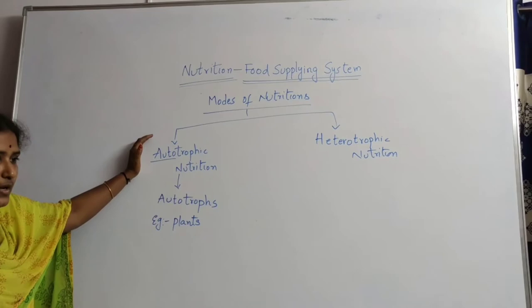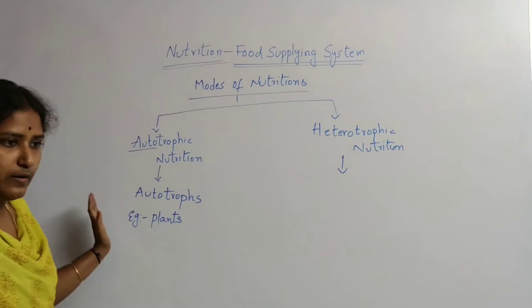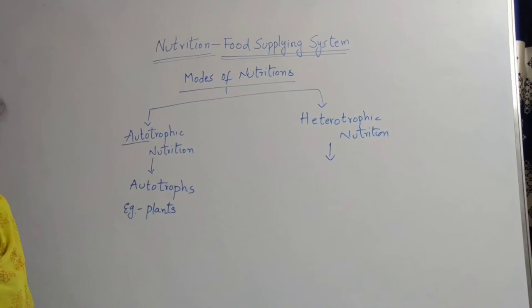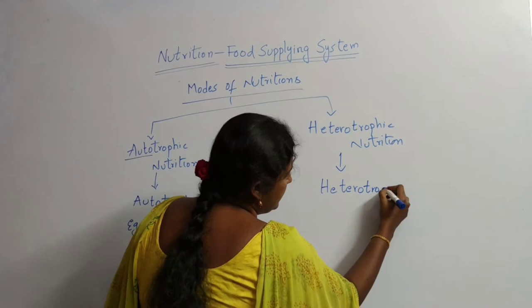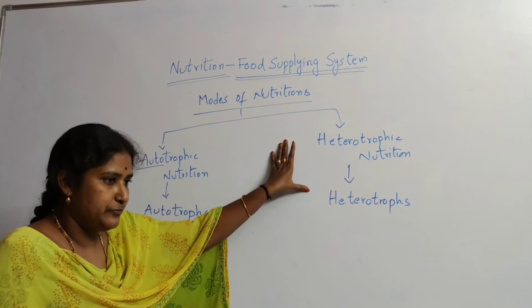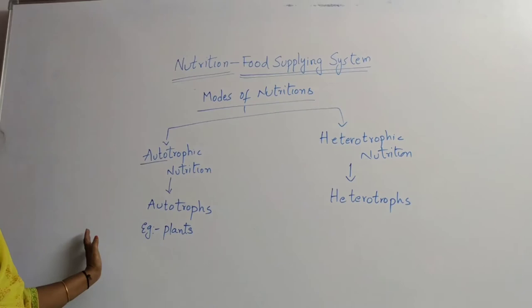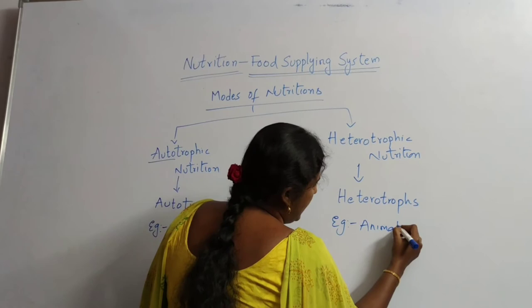Heterotrophs, they depend on food. They depend on food on other animals. For food, they depend on other animals, so we call them heterotrophs. For example, animals. So this is the mode of nutrition.